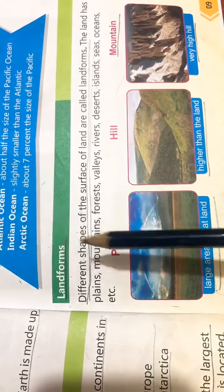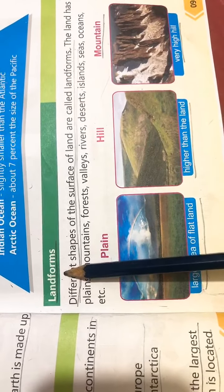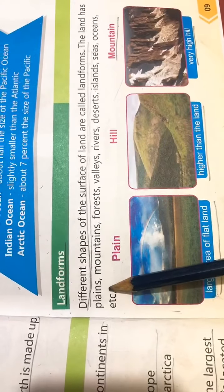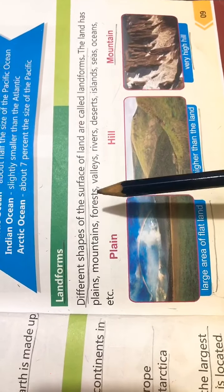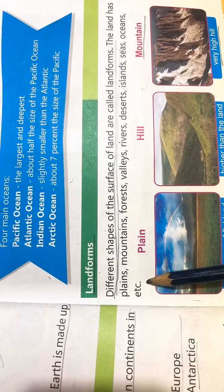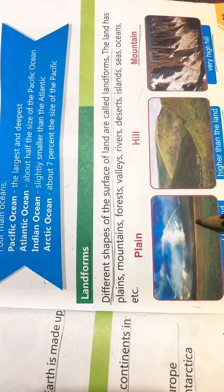Different shapes of the surface of land are called landforms. The land has plains, mountains, forests, valleys, rivers, deserts, islands, seas, and oceans. These are all examples of landforms.